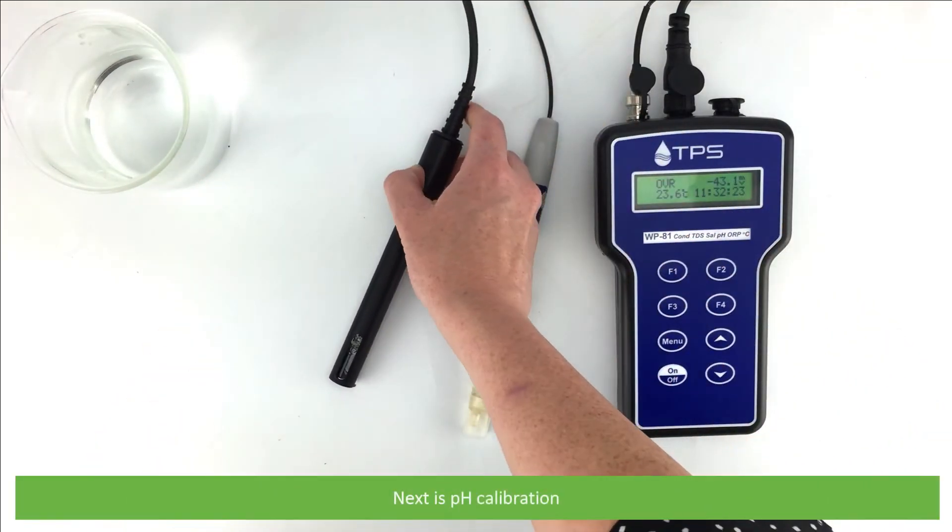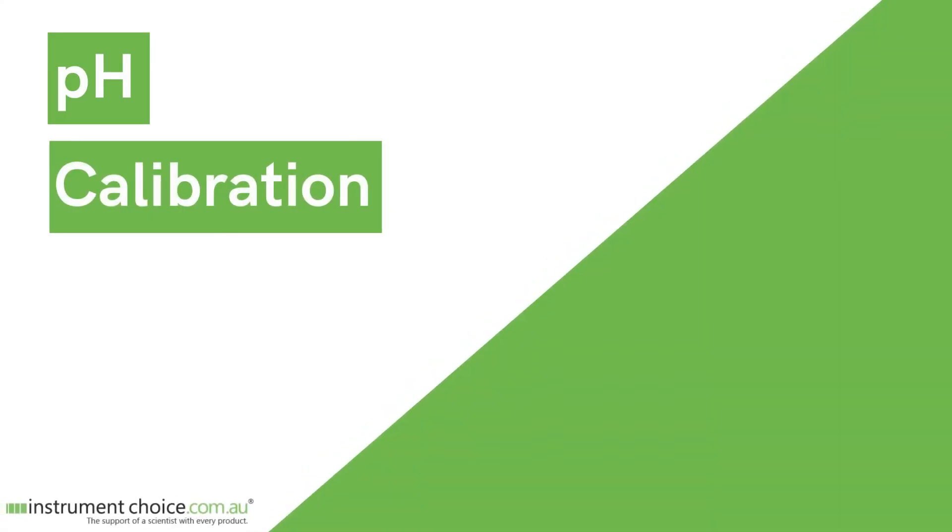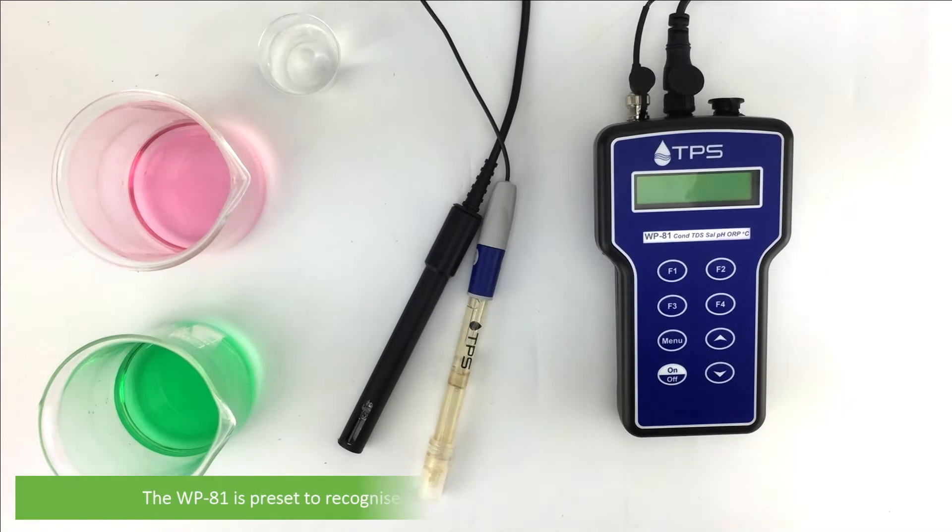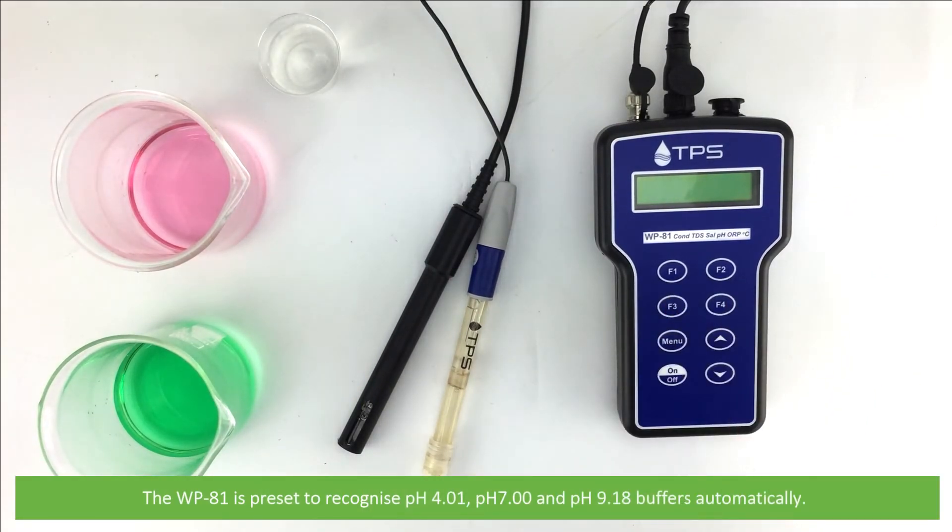Next is pH calibration. The WP81 is preset to recognize pH 4.01, pH 7, and pH 9.18 buffers automatically.